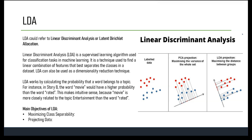How is LDA different from PCA? Three key differences: supervision, objective, and output. LDA requires class labels for training while PCA doesn't. PCA focuses on capturing variance while LDA emphasizes class separability. PCA provides components explaining maximum variance while LDA offers discriminatory directions for class representation.